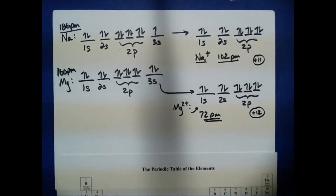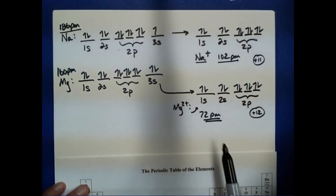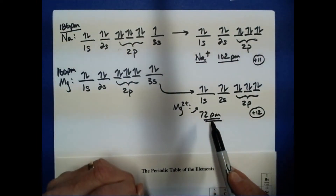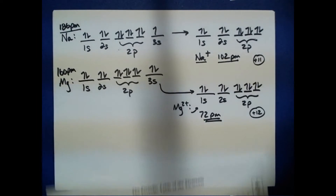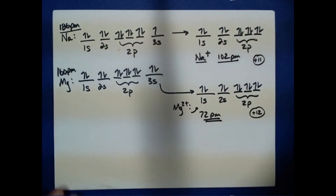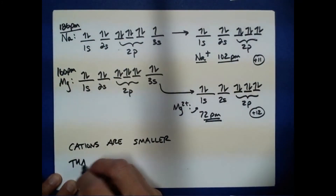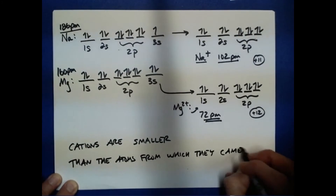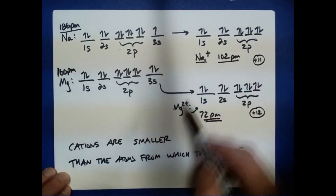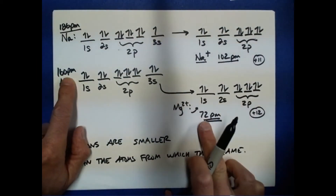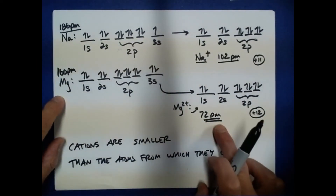The larger the positive charge on a cation, the greater the contraction between the cation formed and the atom from which it came. The general rule is that cations are smaller than the atoms from which they came, and the larger the positive charge — a plus 2 versus a plus 1 — the bigger the shrinkage between the cation and the atom.